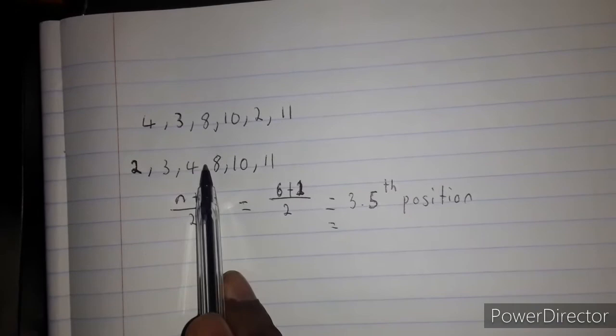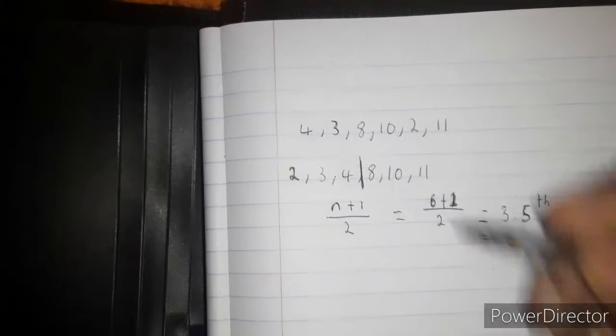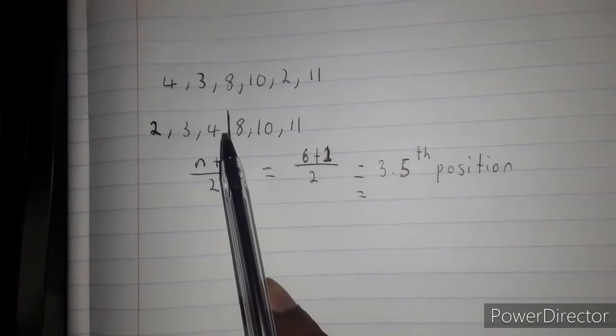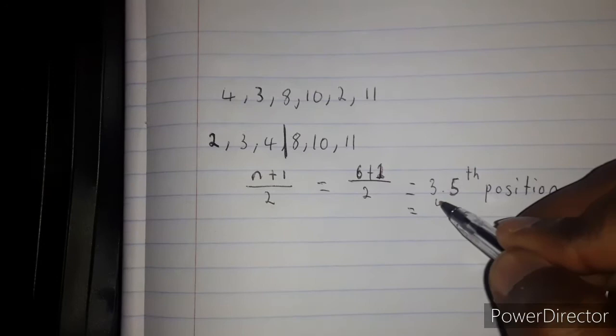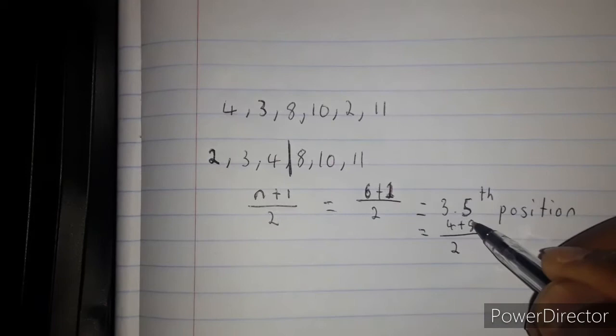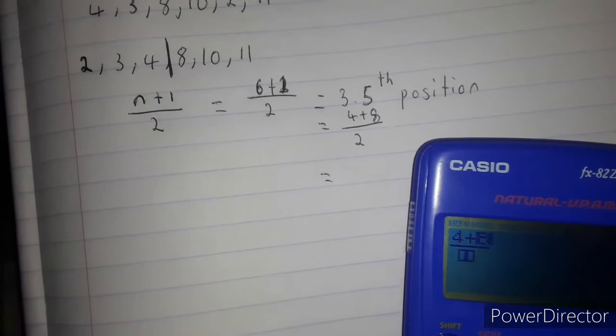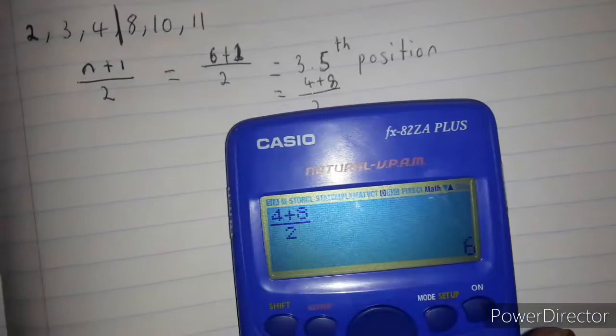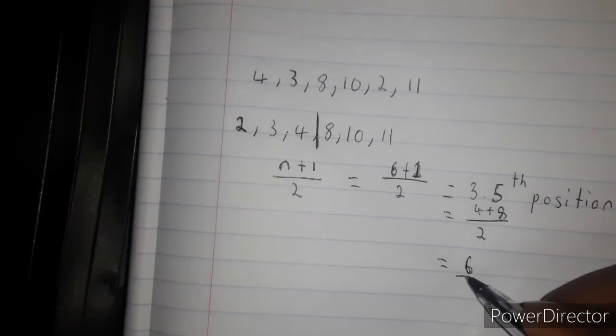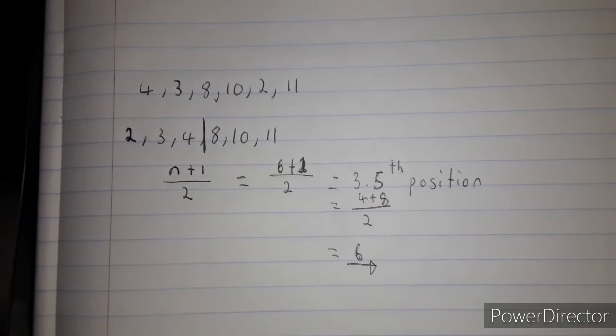In order to find the median, we are going to add 4 and 8 then divide by 2. So 4 plus 8 divided by 2 will give us... 4 plus 8 is 12, divided by 2 is 6. So the median is 6. This is how we calculate the median when n is an even number.